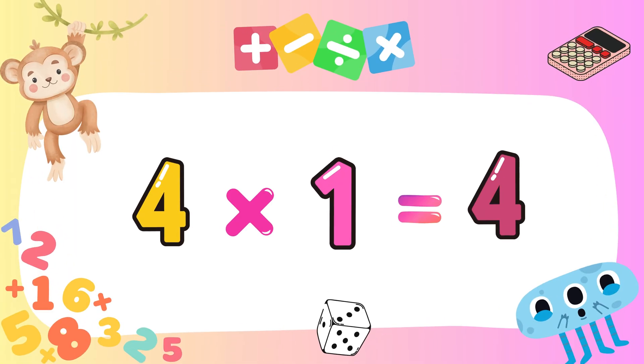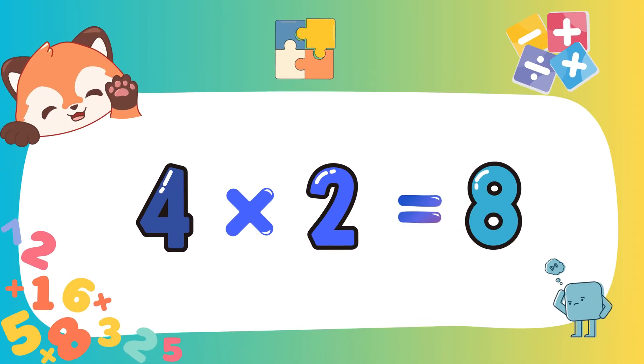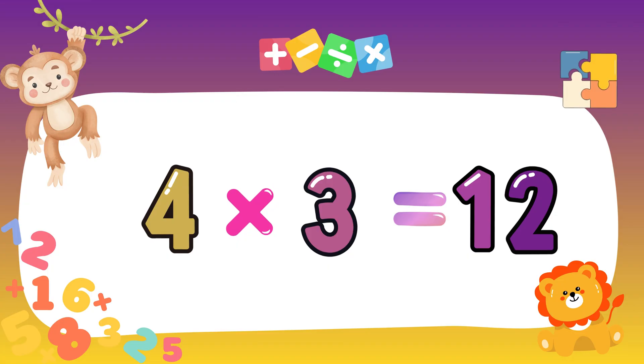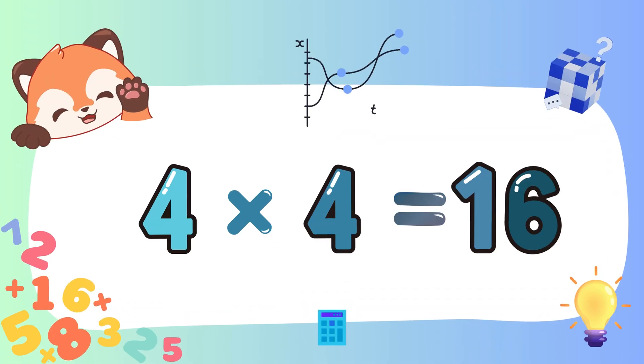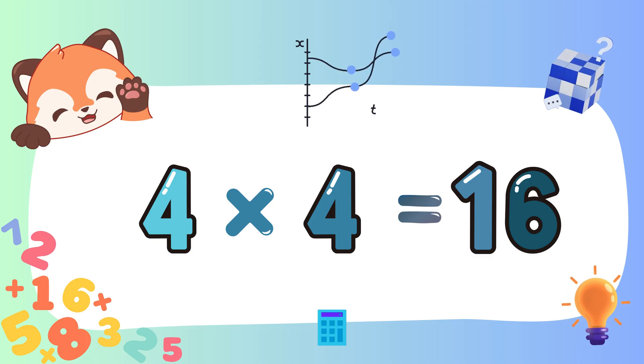Four ones are four. Four ones are four. Four twos are eight. Four twos are eight. Four threes are twelve. Four threes are twelve. Four fours are sixteen. Four fours are sixteen.